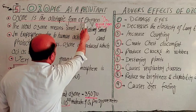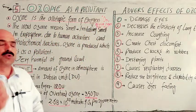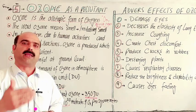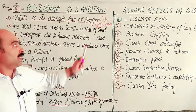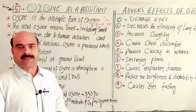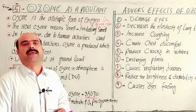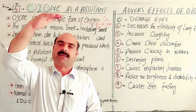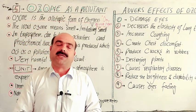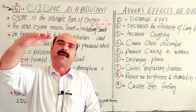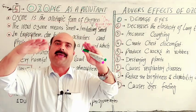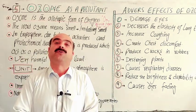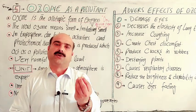Ozone is the allotropic form of oxygen. Oxygen exists as atomic oxygen, molecular oxygen (O₂), and O₃, the triatomic molecule. Ozone is bluish in color. The ozone layer is found in the range of 25 to 28 kilometers according to our book, where it forms a protective cover or envelope of ozone gas.